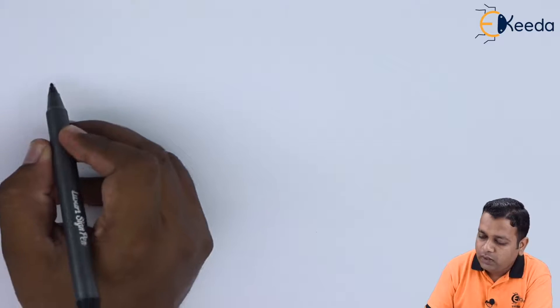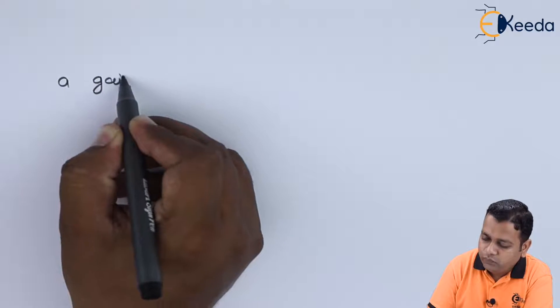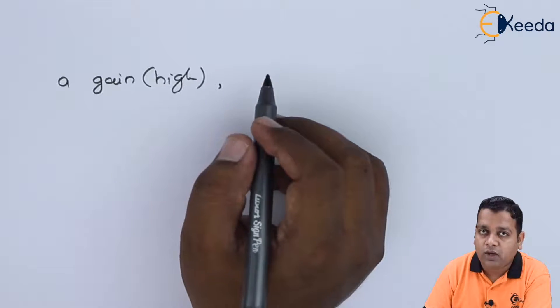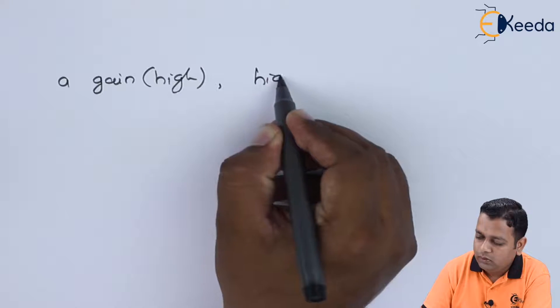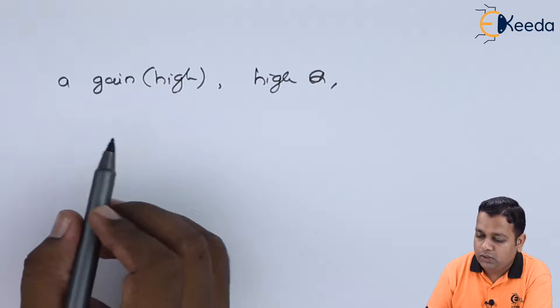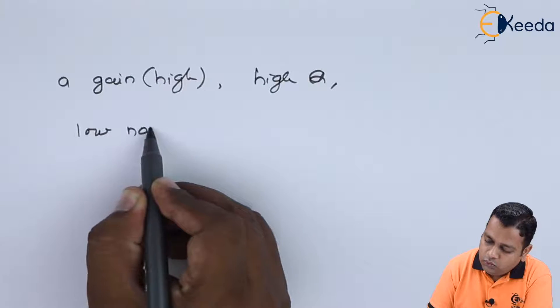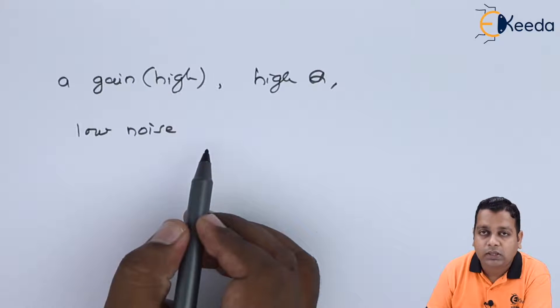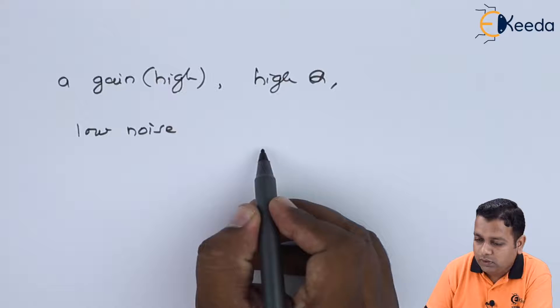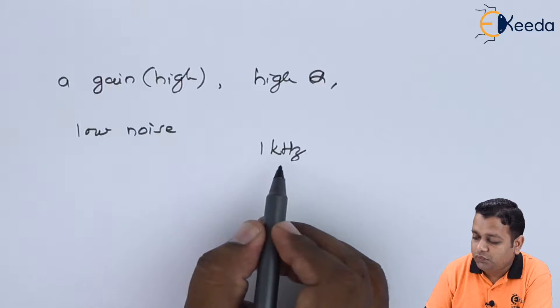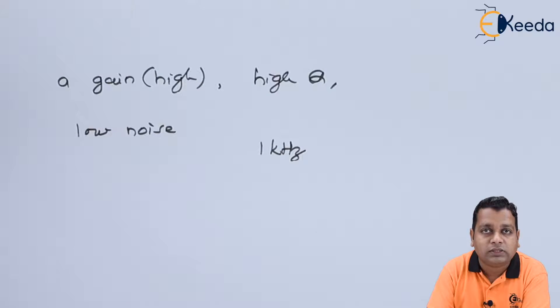Now the VSWR meter further makes the use of a high gain, the gain value should be high, the quality factor value should also be high. So high Q is there, and also it should be of the low noise type. Such amplifier is working with a fixed frequency, for example the frequency of lower order one kilohertz.